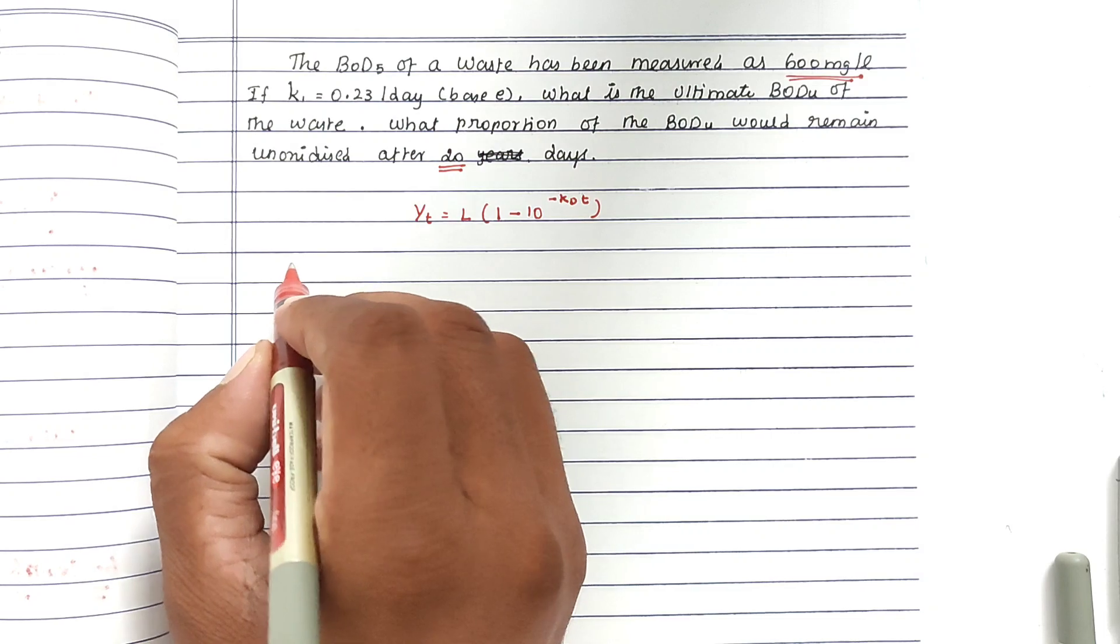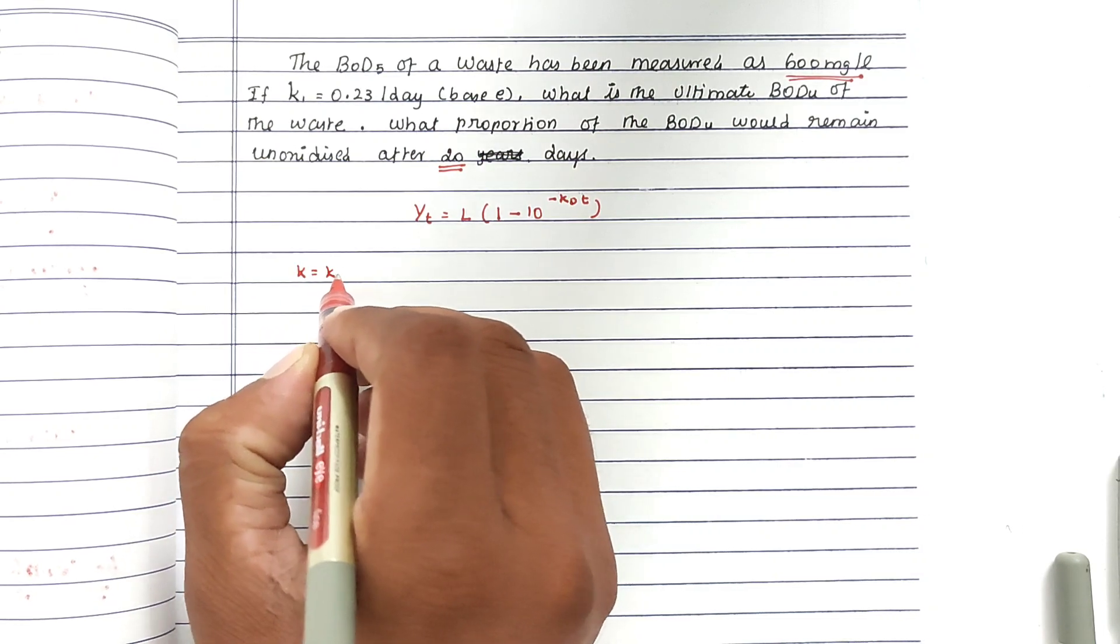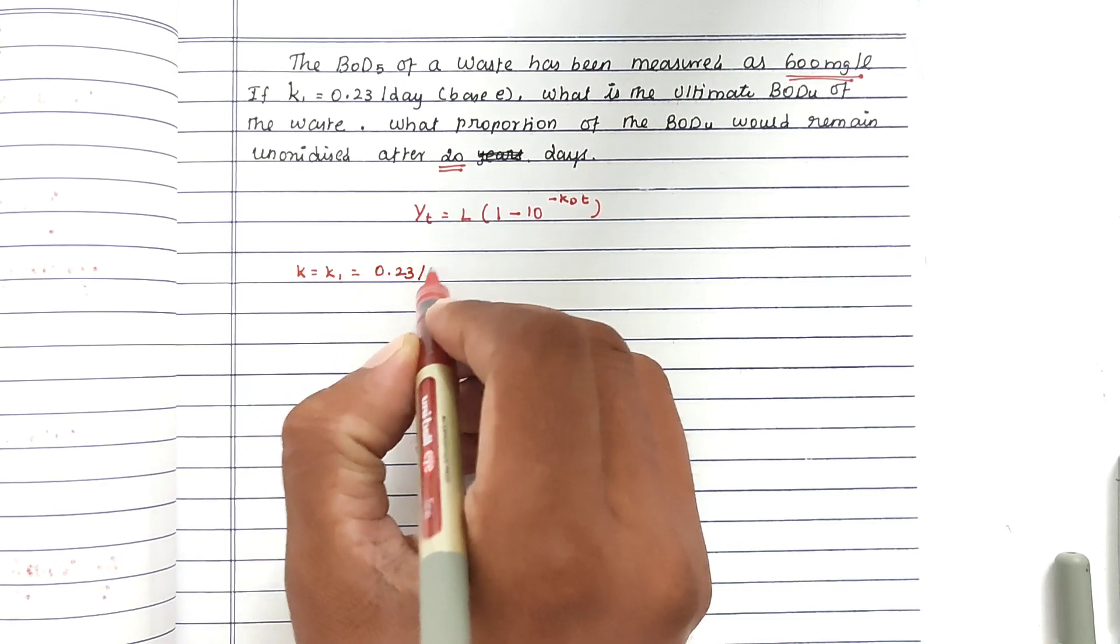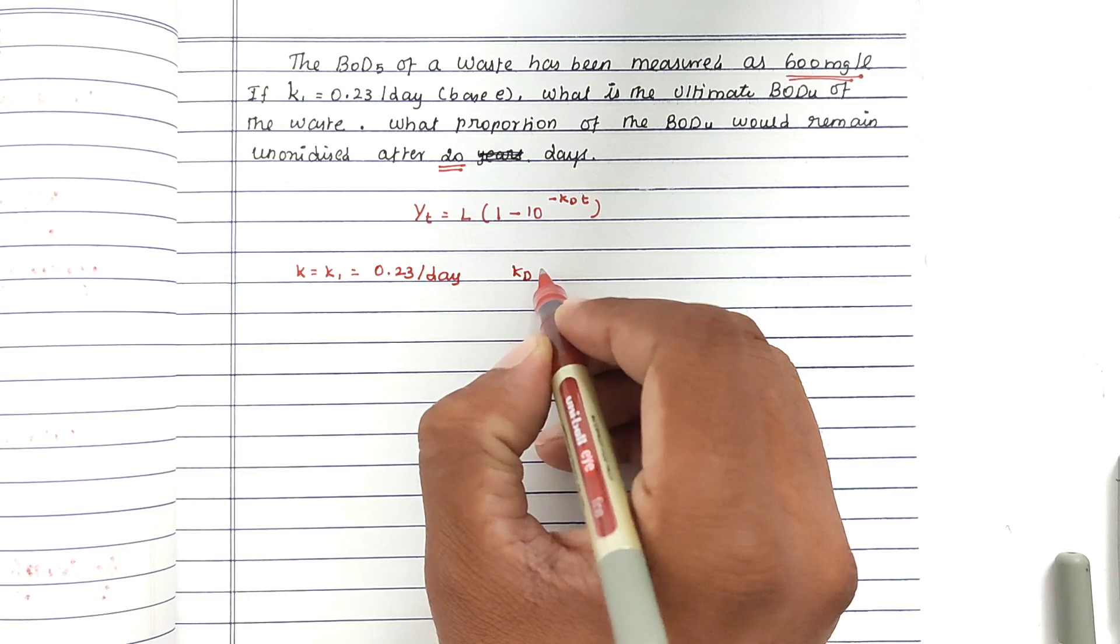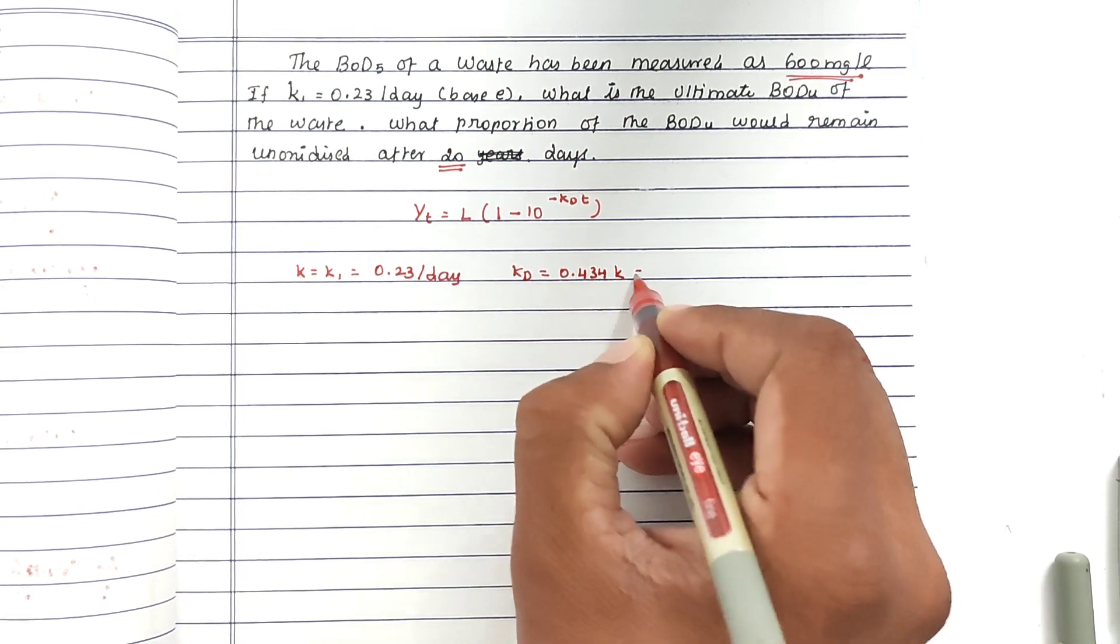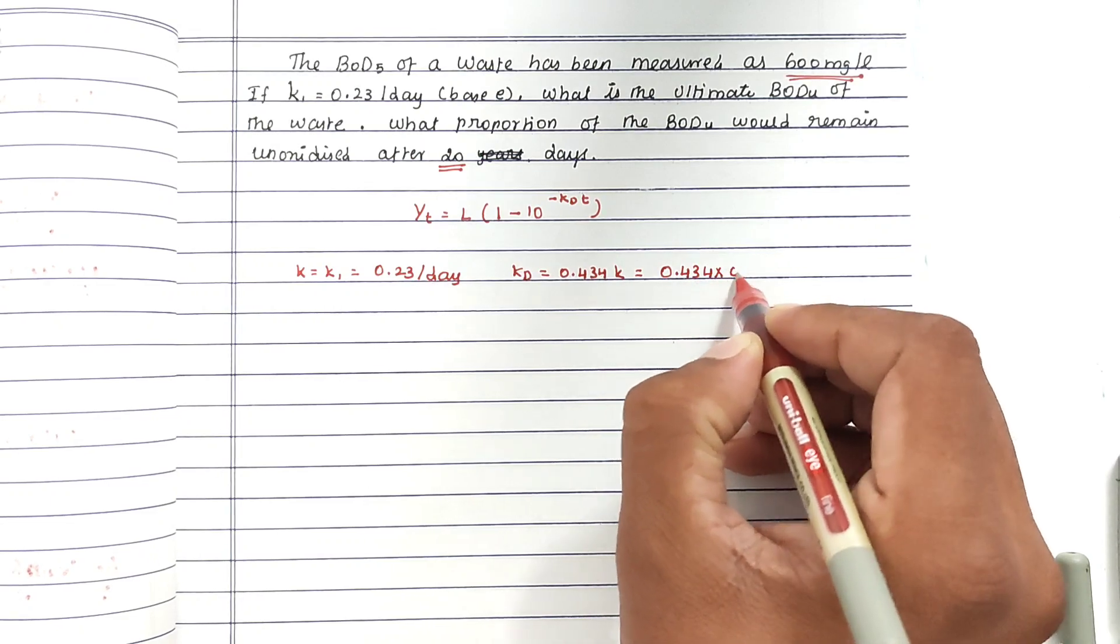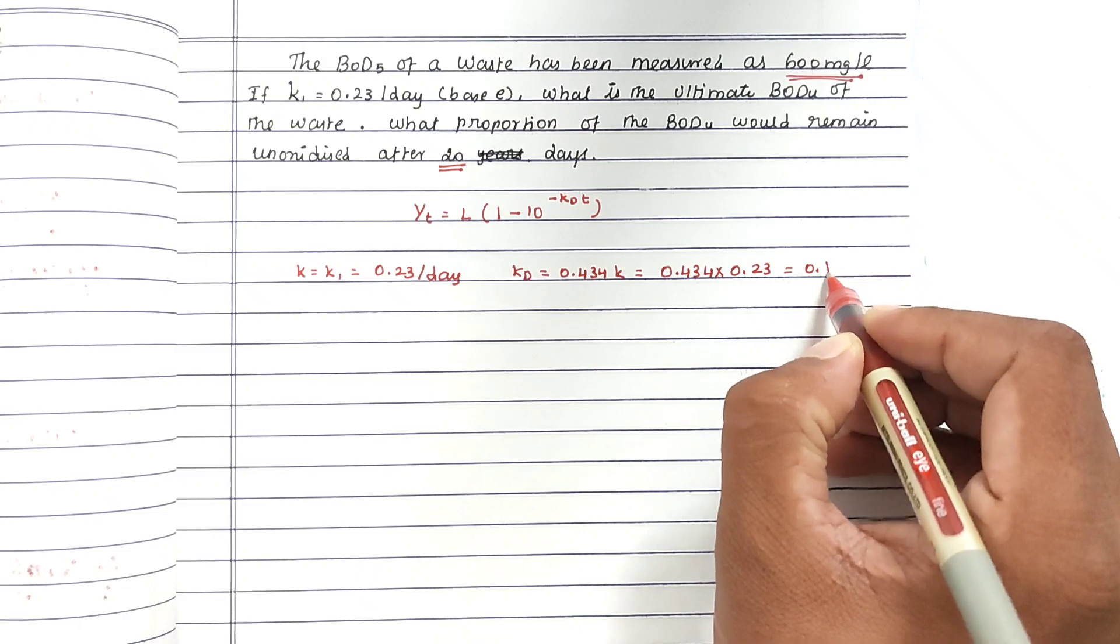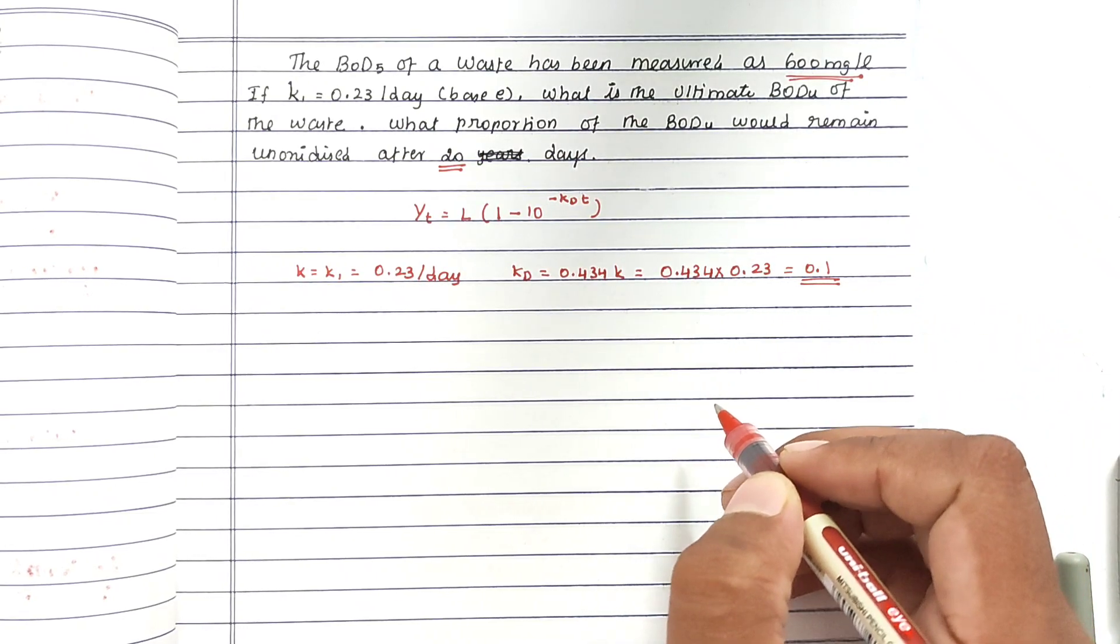The K value, K1, is given as 0.23 per day. Now we have to find out the KD value. We can substitute: KD = 0.434 × 0.23. The value is 0.1, so KD = 0.1.